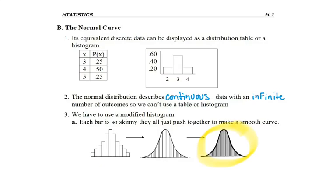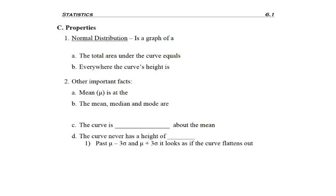What we have here is what just looks like a curve that's filled in. So let's go ahead and talk about that curve specifically. That curve for our normal distribution is a graph, and it's a graph of a continuous symmetrical bell-shaped curve.